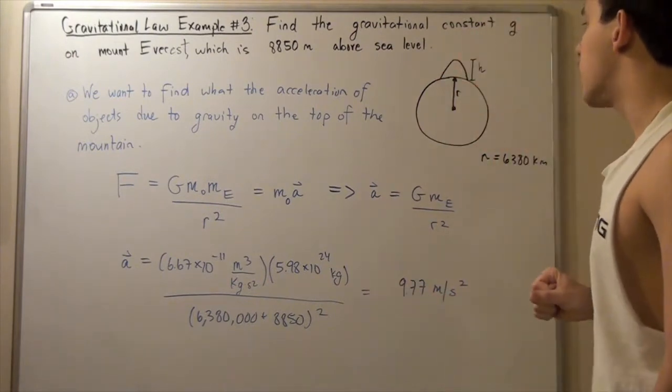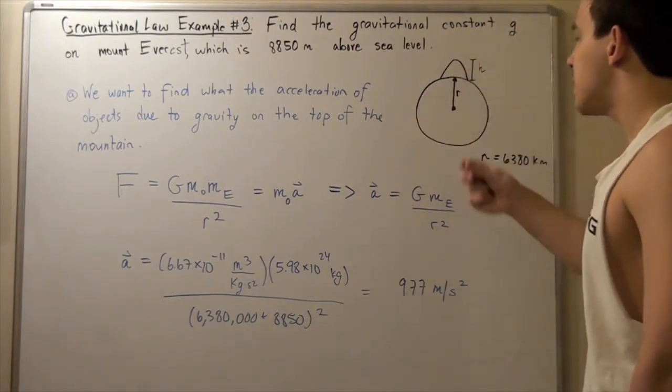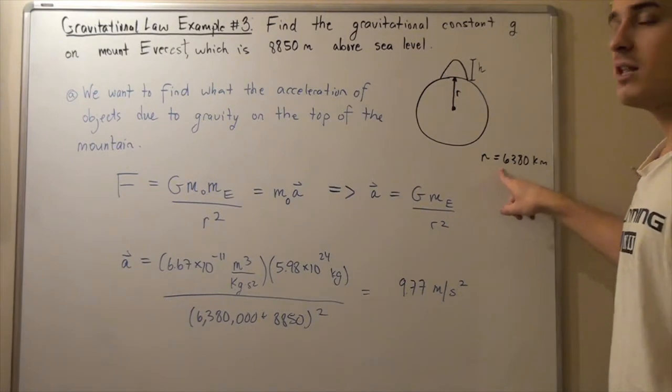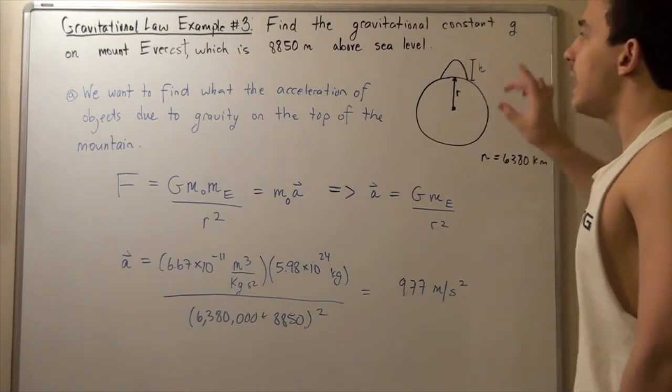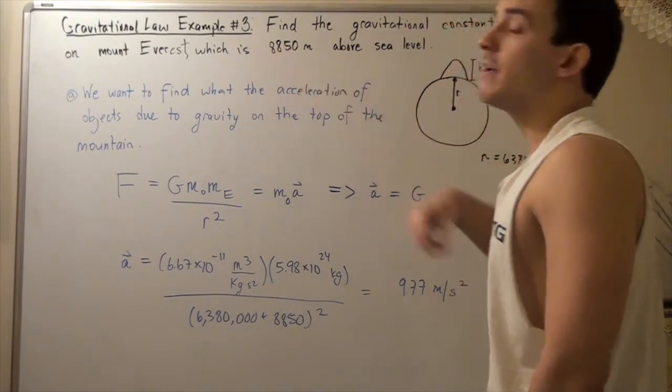Let's look at our diagram. This is our Earth, which has a radius of 6,380 kilometers, and this is our mountain, which has a height of 8.85 kilometers.